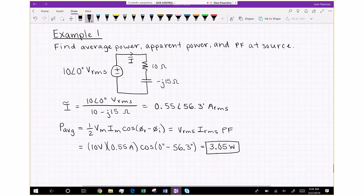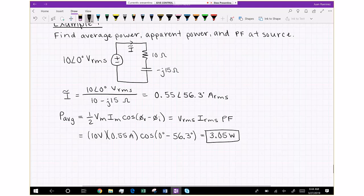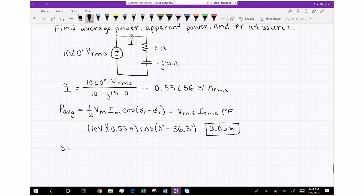Let's take a look at apparent power. Apparent power is just the VRMS times the IRMS. That's pretty straightforward. It's 10 volts times 0.55 amps. That gives you 5.5 volt amps.